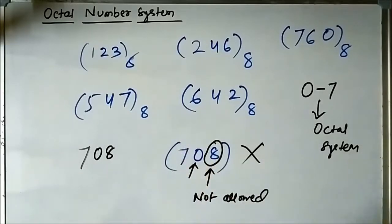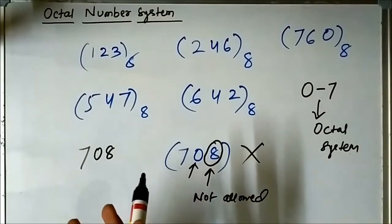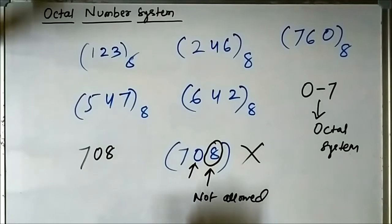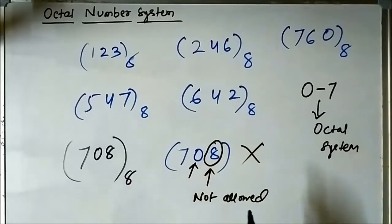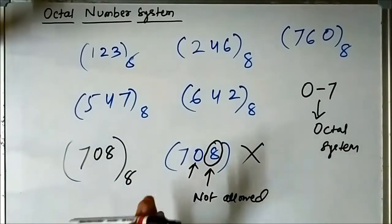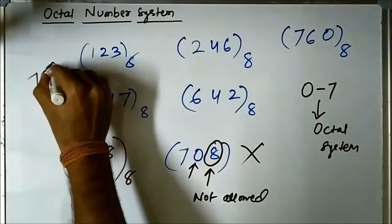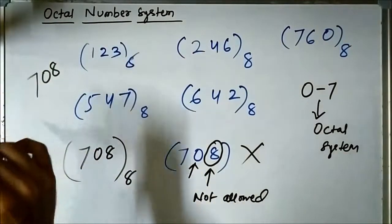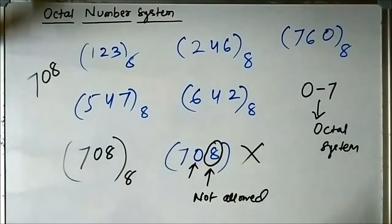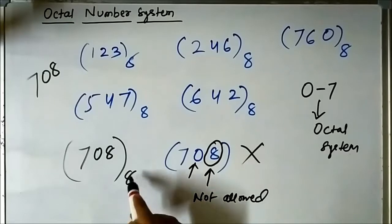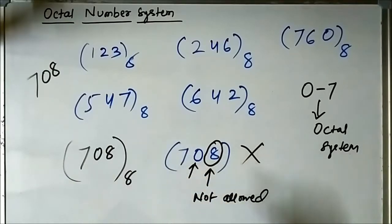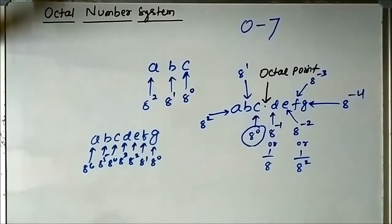If a number like 708 is given, how do you know which number system it belongs to? Always put the base or radix of that number — this is very important in digital electronics. If you write 708 in any other context, almost everyone will consider it decimal. But in digital electronics, when dealing with number systems, you must always mention the base or radix of the number after the bracket.